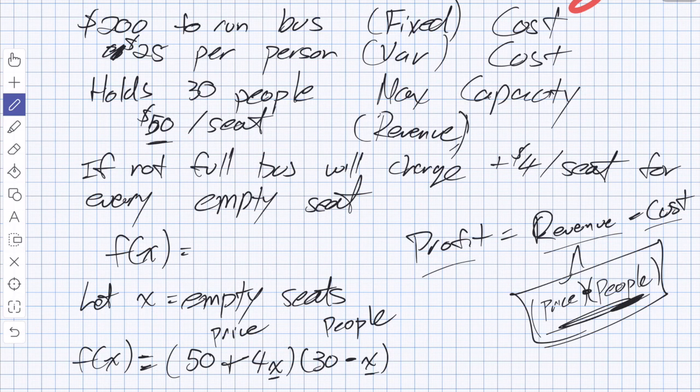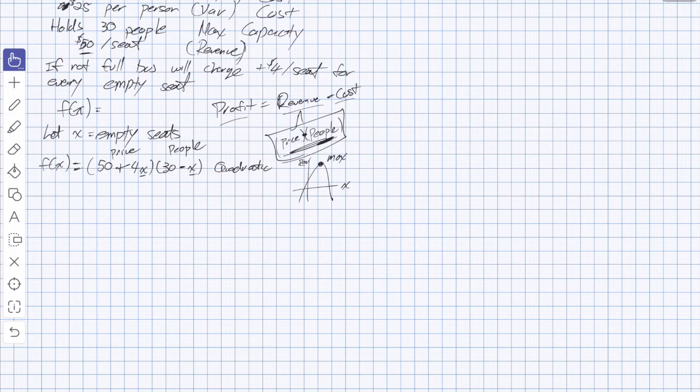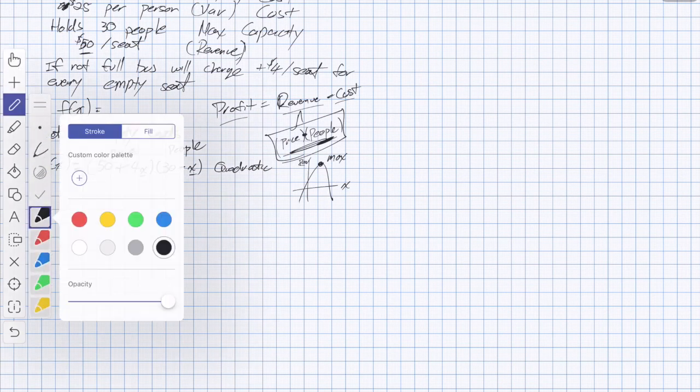The second part is people on the bus. The people on the bus is going to be 30, because it maxes at 30, minus empty seats. If there's five empty seats and there's 30 people, 30 minus 5, 25 people on the bus. So this is our price, and this is our people. Price times people is going to give you revenue. So we've turned this into a function, and if you take a quick glance, this is actually a quadratic.